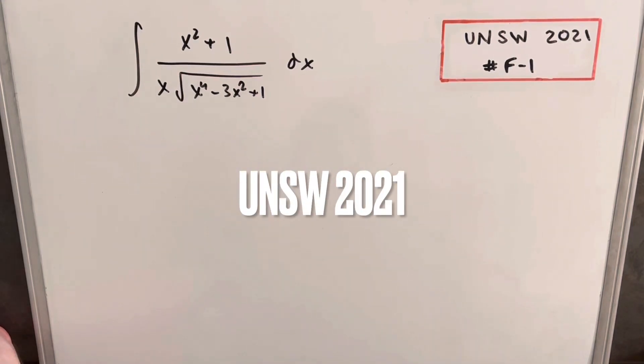Hey, I've got here another integral from the UNSW integration B2021. This is from the final round, problem one. We have the integral of x squared plus 1 over x times the square root of x to the 4th minus 3x squared plus 1 dx.